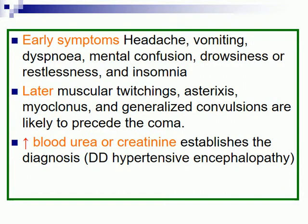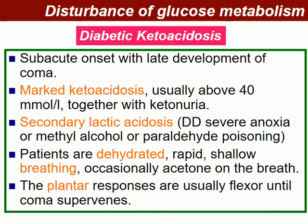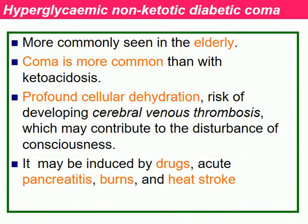Early symptoms of renal coma include headache, vomiting, dyspnoea, mental confusion, drowsiness, restlessness, and insomnia. Later there is muscular tension, asterixis, myoclonus, and generalised convulsions, with elevated concentrations of urea and creatinine in plasma. Disturbances of glucose metabolism can lead to diabetic ketoacidosis, or hyperglycaemic non-ketotic diabetic coma, more commonly seen in elderly patients.